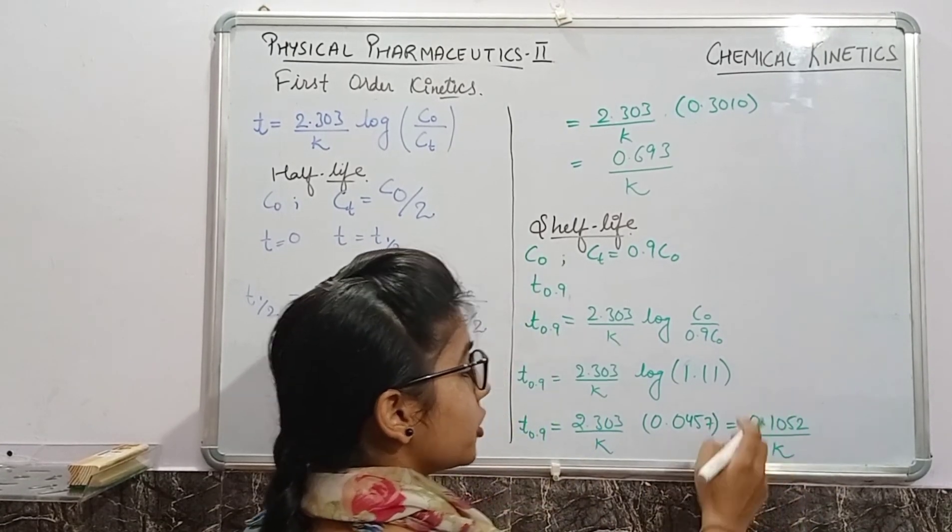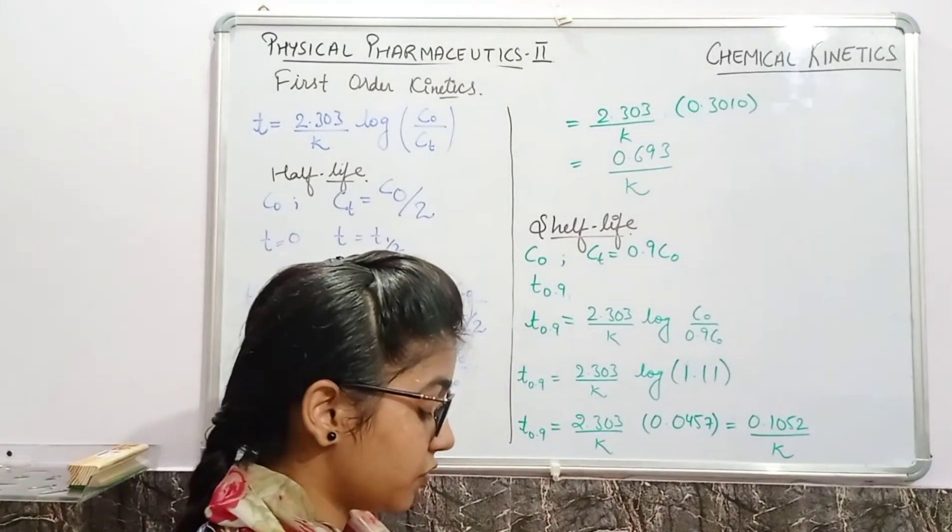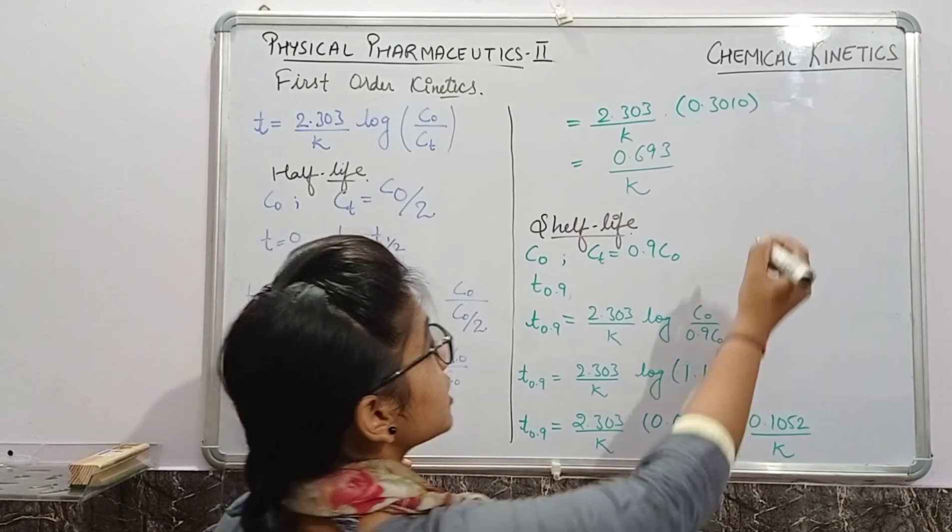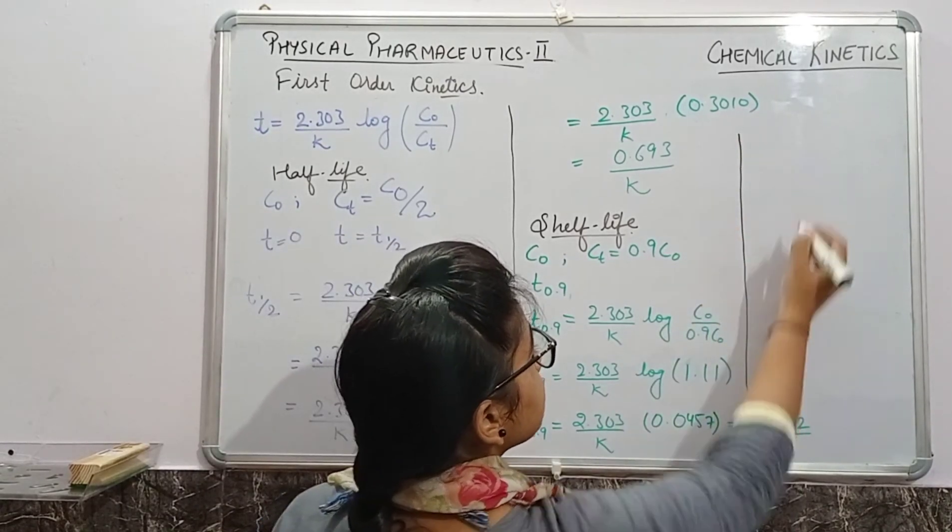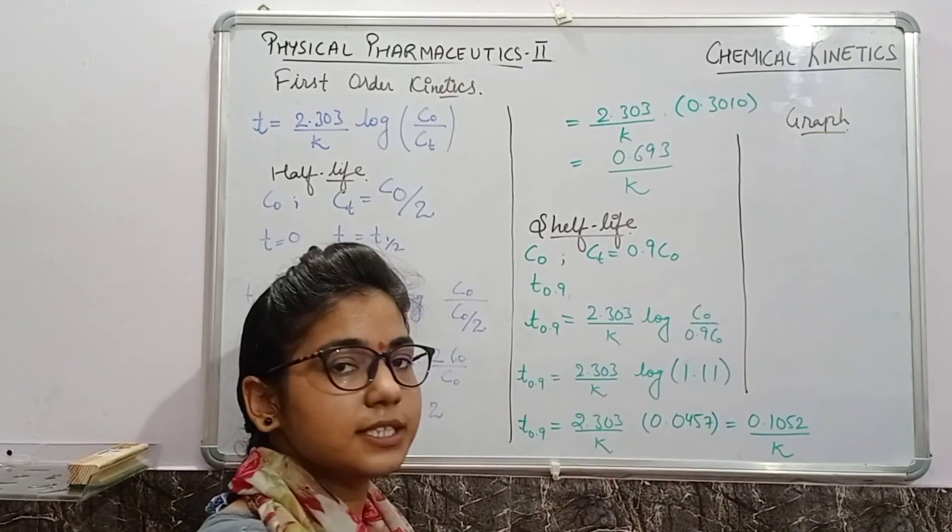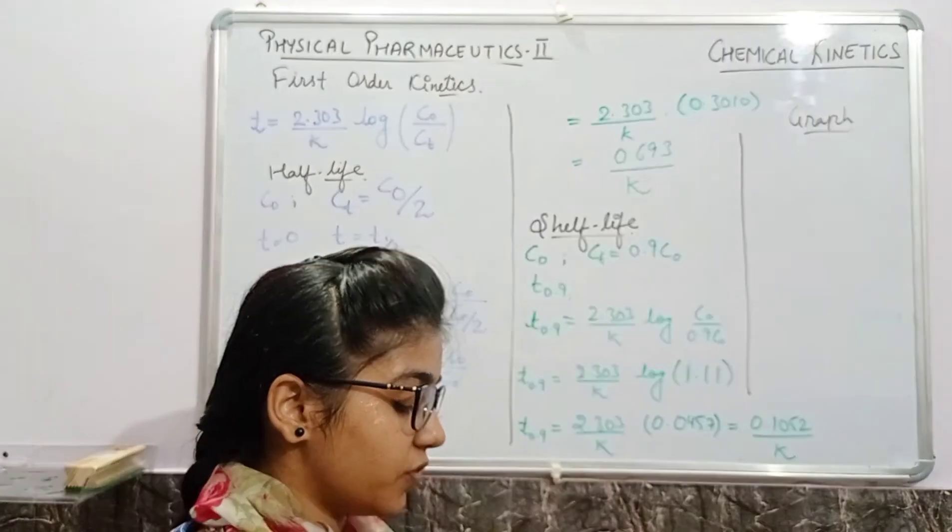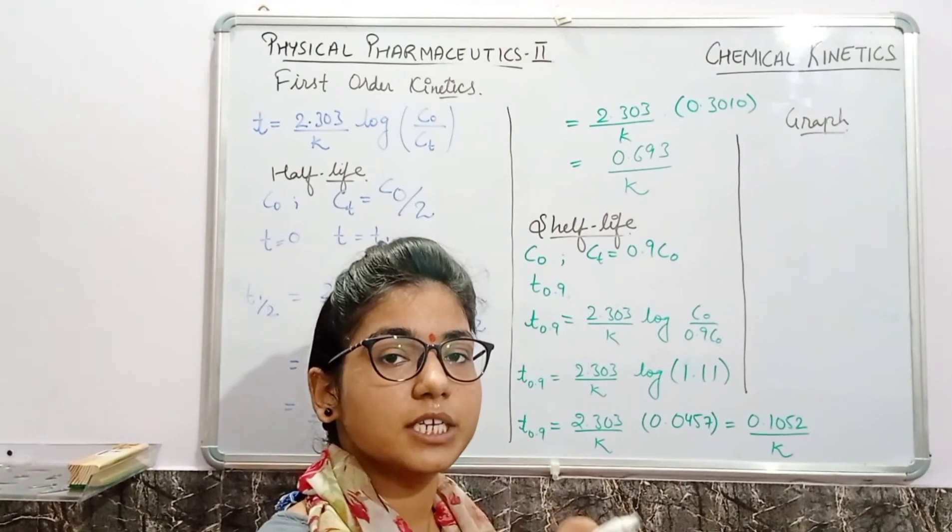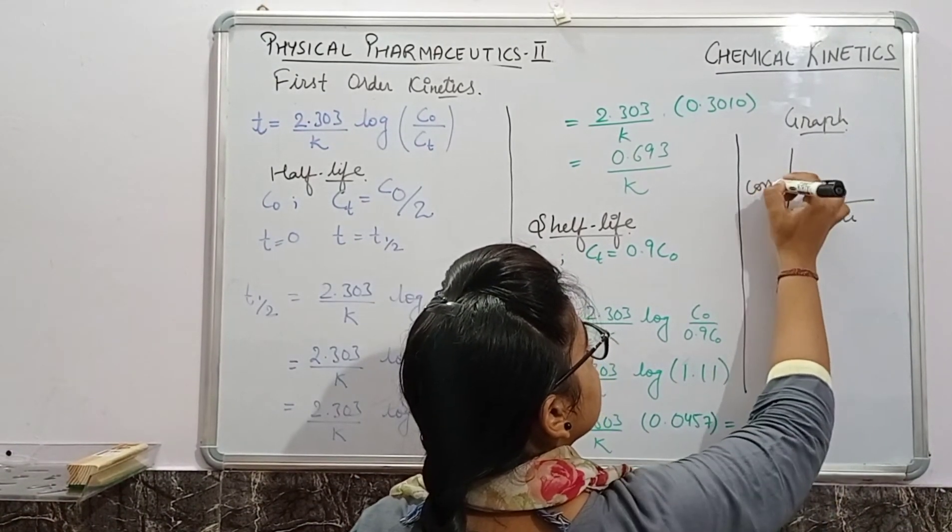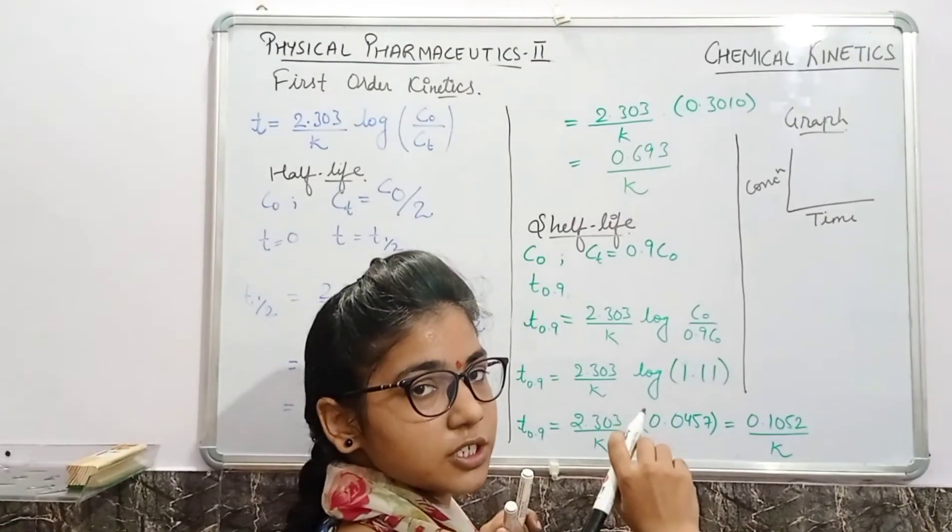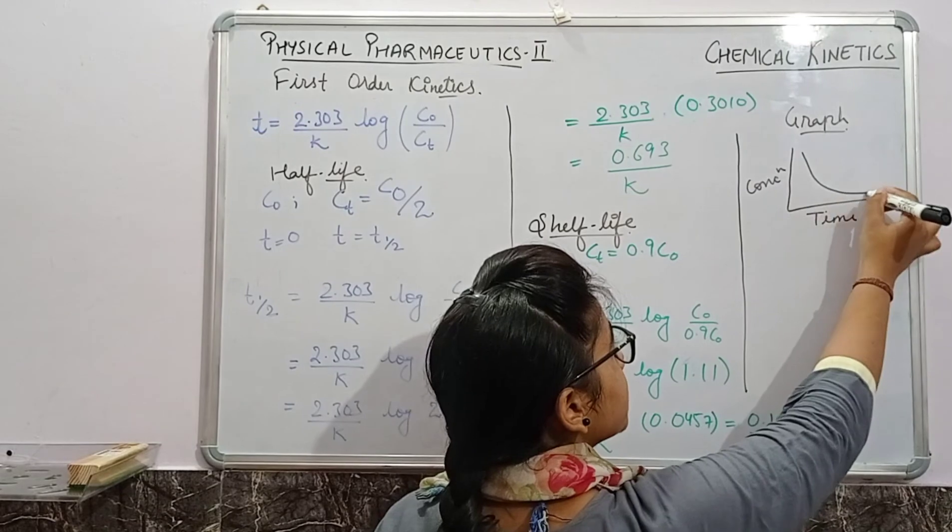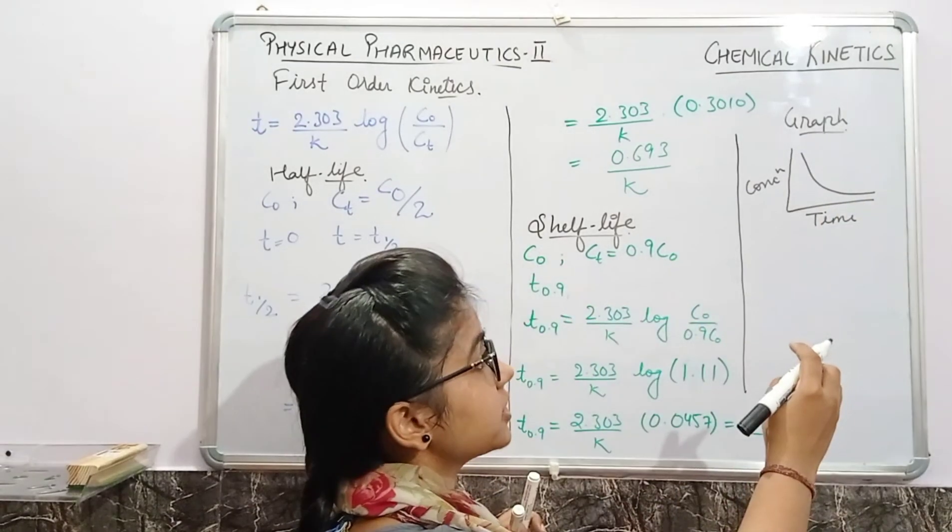So this is the formula you will use to calculate the shelf life of a first order reaction kinetics. And the last thing which is remaining in this equation is its graph. Always remember there are two kinds of graph plots. First one is when it is plotted time against concentration.